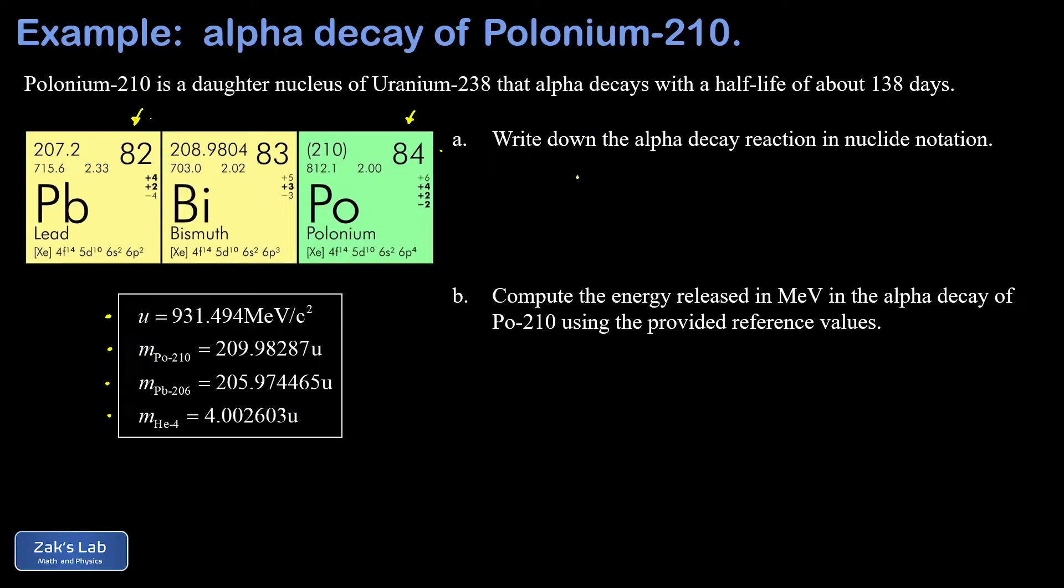As we start to look at the reaction, we're going to look at polonium-210 in its proper nuclide notation. The atomic number goes on the lower left, that's 84—84 protons is what that means. Polonium-210 means 210 total nucleons, so then we can get the number of neutrons by just taking 210 minus 84, and this gives us 126 total neutrons.